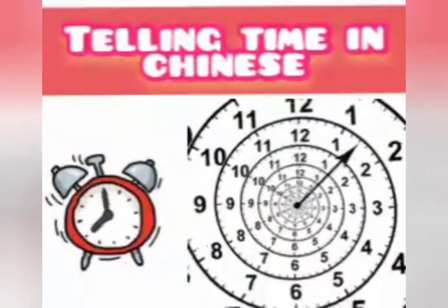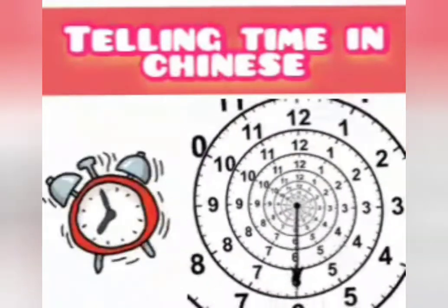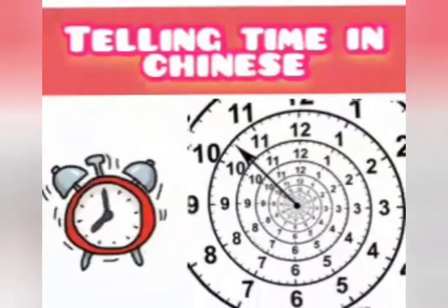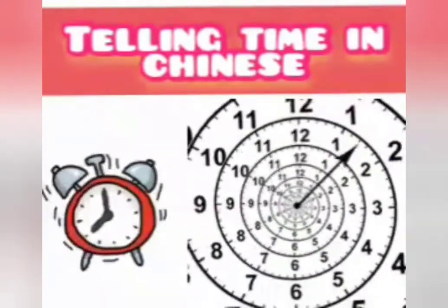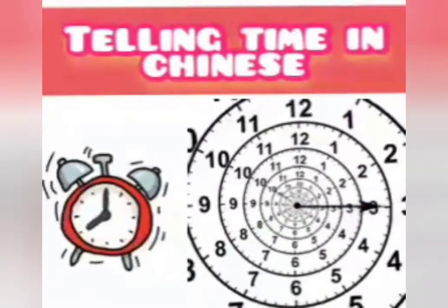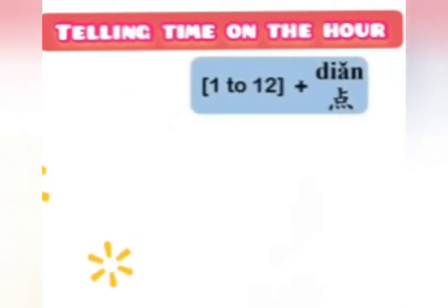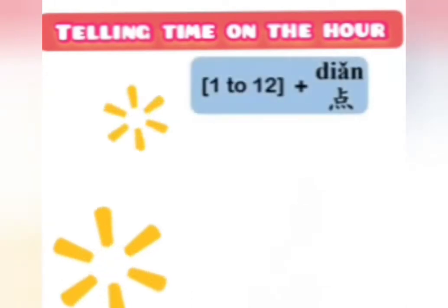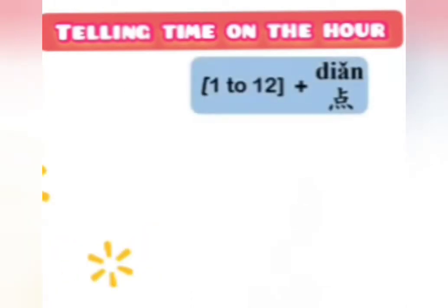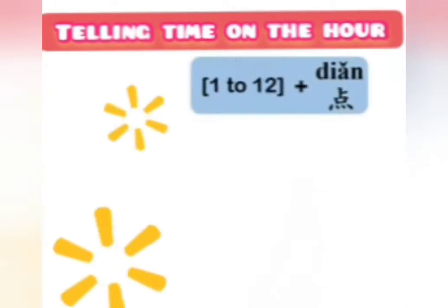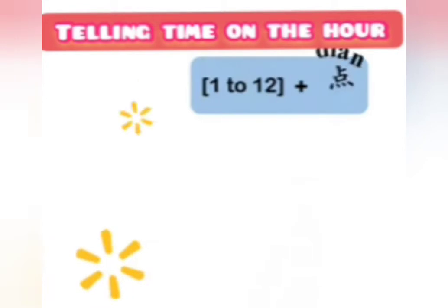Today we're going to learn how to tell time in Chinese. First, we'll cover telling time on the hour. To tell time on the hour, we simply put the numbers from 1 to 12 before 点.